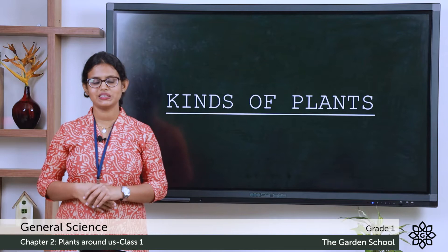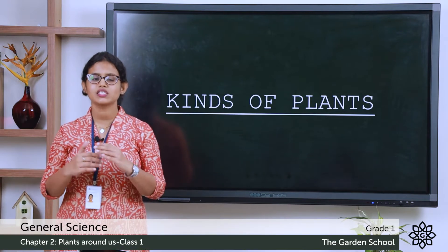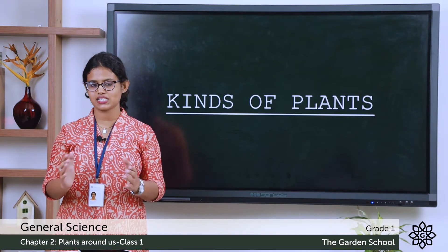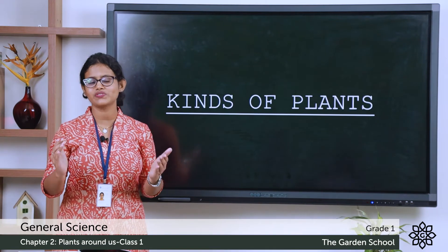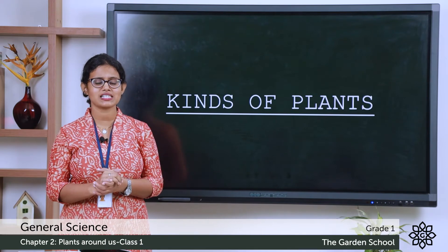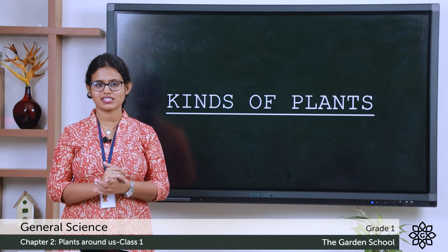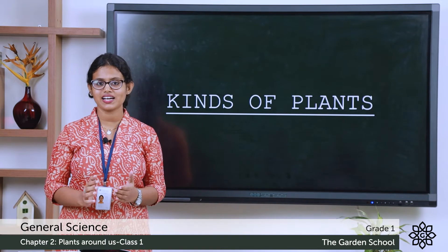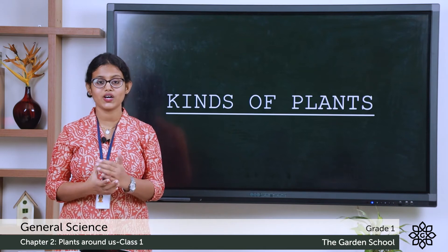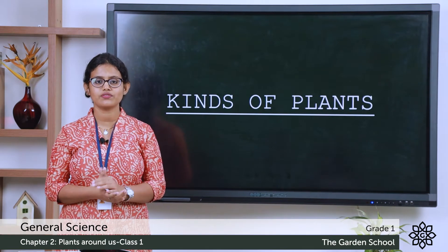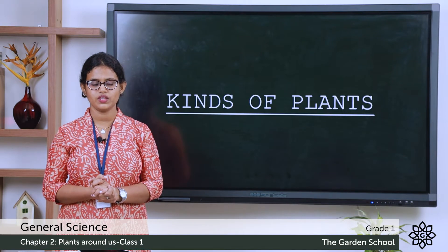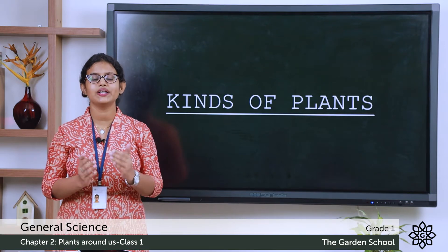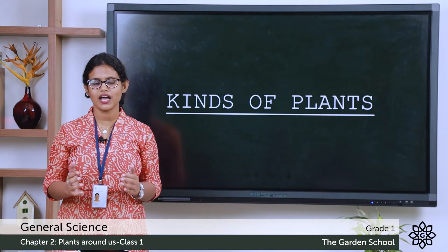A very good morning to all. Today we are moving on to the next chapter in science, which is about plants around us. We live in a very beautiful world and around us we can see different kinds of plants. Is a plant a living thing or a non-living thing? Plants are living things because they need air, water, and food to live. There are different kinds of plants around us.